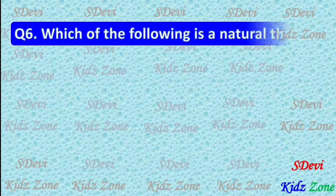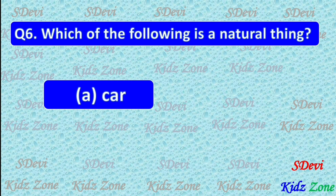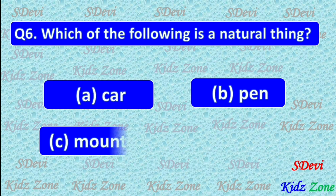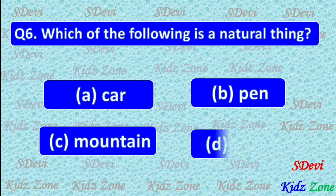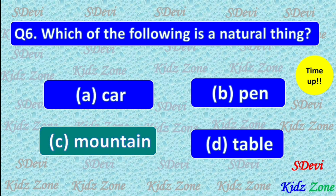Question number 6. Which of the following is a natural thing? A. A car. B. Pen. C. Mountain. D. Table. The correct answer is C. Mountain.